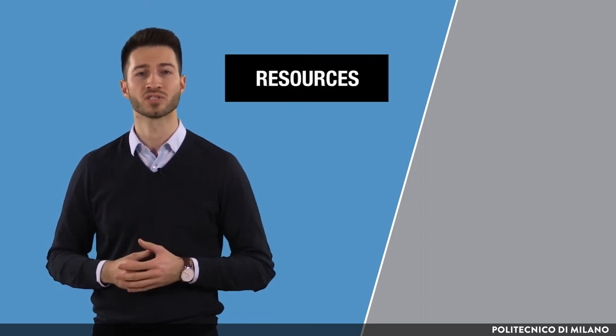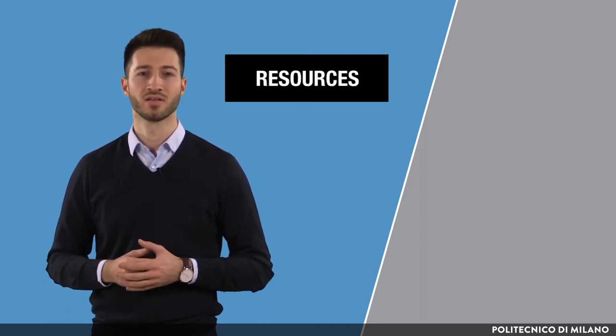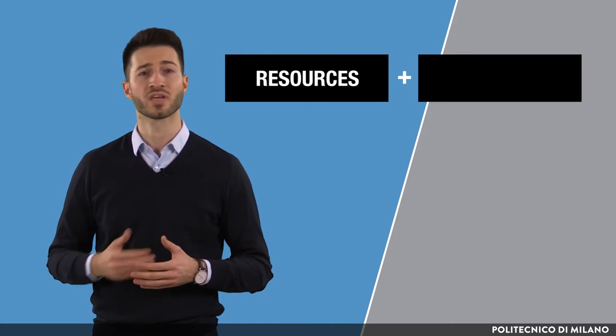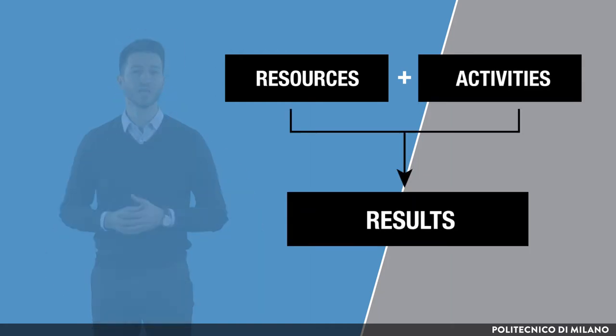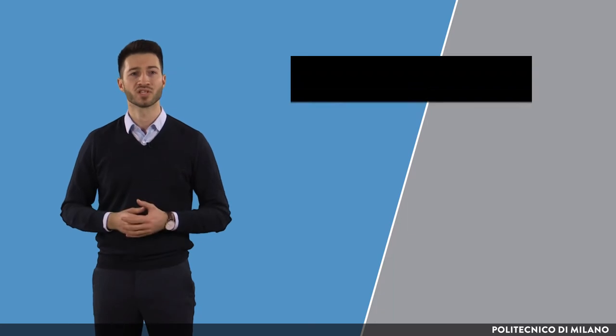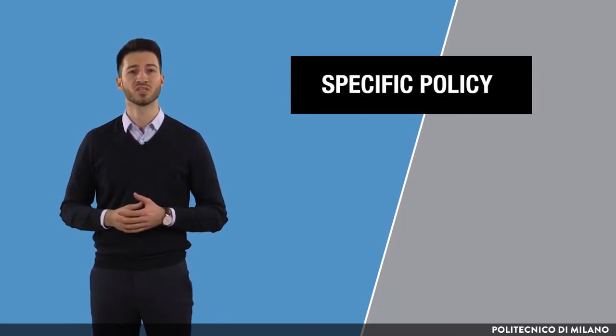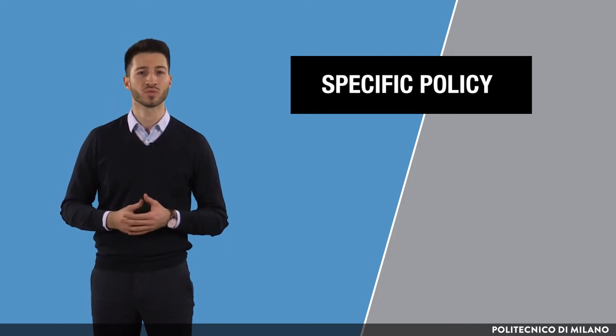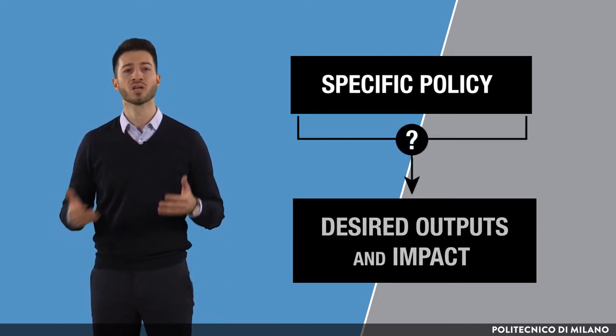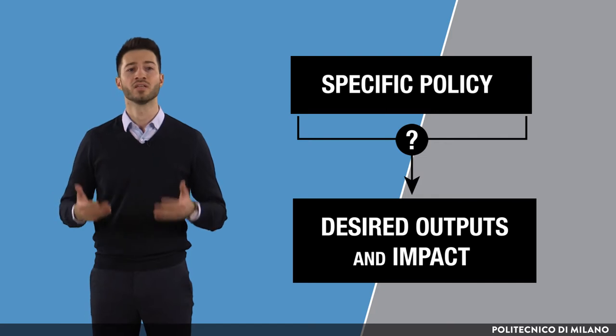Entrepreneurship policy has a demanding objective of addressing complex market failures as well as cultural barriers that hamper activities of young innovative ventures. In order to do so, a policy uses and allocates resources that are inherently scarce. The combination of these scarce inputs and carried-out activities leads to results. It is vital to understand whether a specific policy — that is, the used inputs and carried-out activities related to the specific policy instrument — leads to the desired outputs, outcomes, and, most importantly, the desired impact.